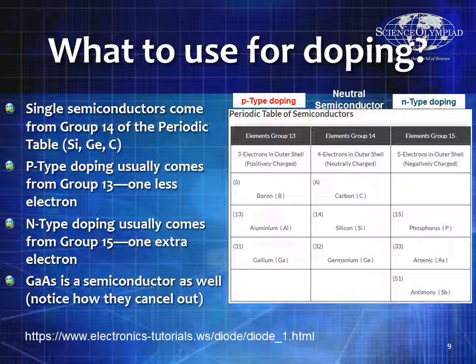Keep in mind that most single semiconductors come from Group 14 of the periodic table — silicon, germanium, carbon. P-type doping usually comes from Group 13, one less electron. N-type doping usually comes from Group 15, one extra electron. Notice how gallium arsenide is a semiconductor as well — you've taken Group 13 gallium and Group 15 arsenic and put them together.